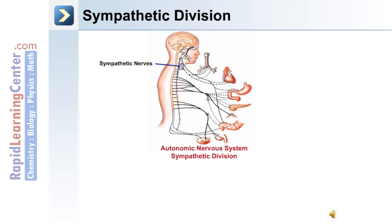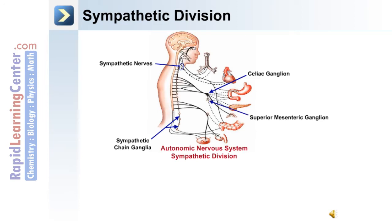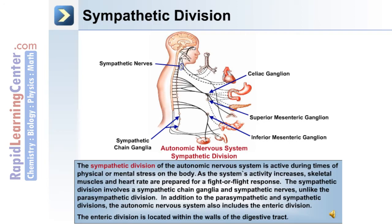The sympathetic division includes sympathetic nerves that extend from ganglia, such as sympathetic chain ganglia and regional ganglia, such as celiac, superior mesenteric, and inferior mesenteric ganglion. The sympathetic division of the autonomic nervous system is active during times of physical or mental stress. As the system's activity increases, skeletal muscle and heart rate are prepared for a fight-or-flight response.